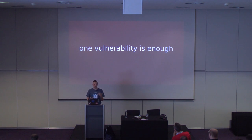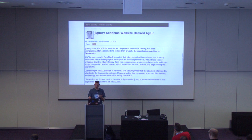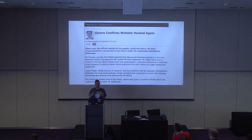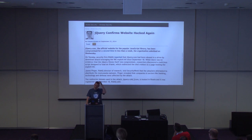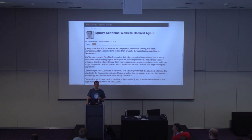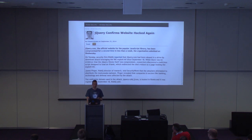Why does one vulnerability matter? Unfortunately, vulnerabilities exist on the web — in 2014, jQuery was compromised twice according to a blog post. You don't want to use a CDN that may be compromised and pollute your whole origin. There is also another security problem with CDNs that doesn't just affect your website, but the web in general.